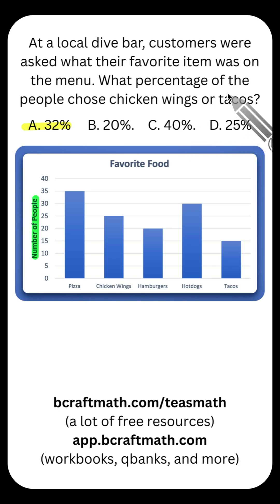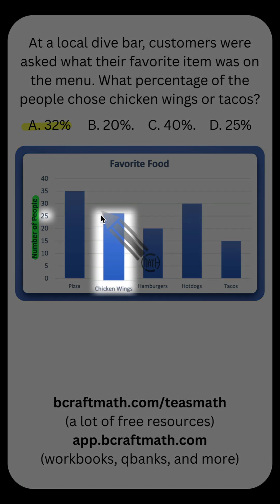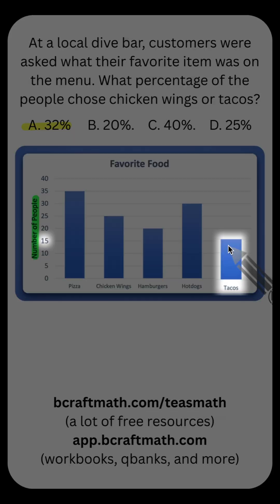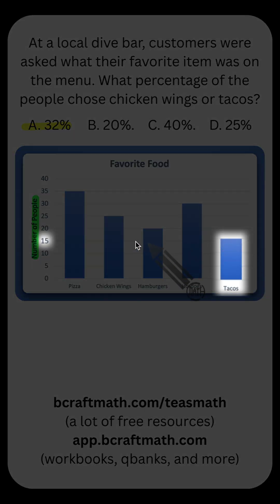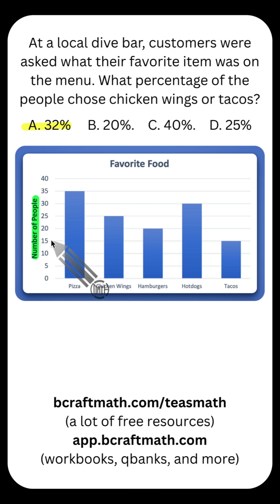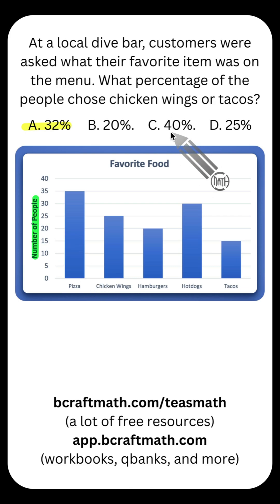Now let's look at chicken wings and tacos. Chicken wings: 25 people — not percent. And for tacos, we have 15 people. That is a total of 40 people, 25 plus 15. But that's not 40 percent.